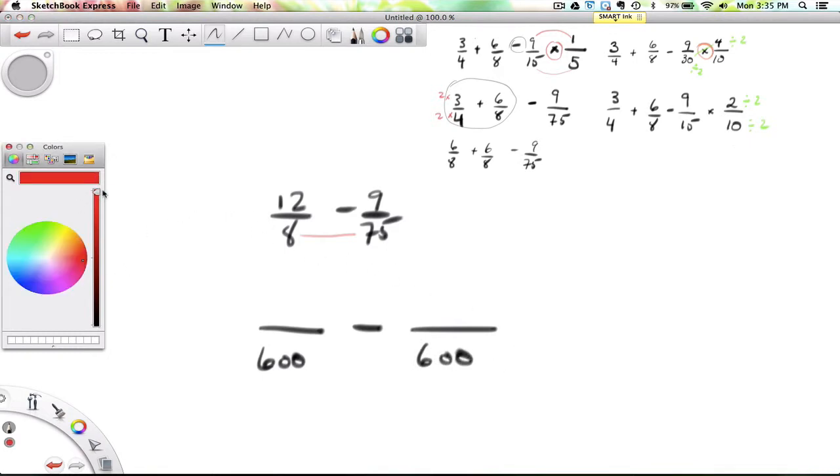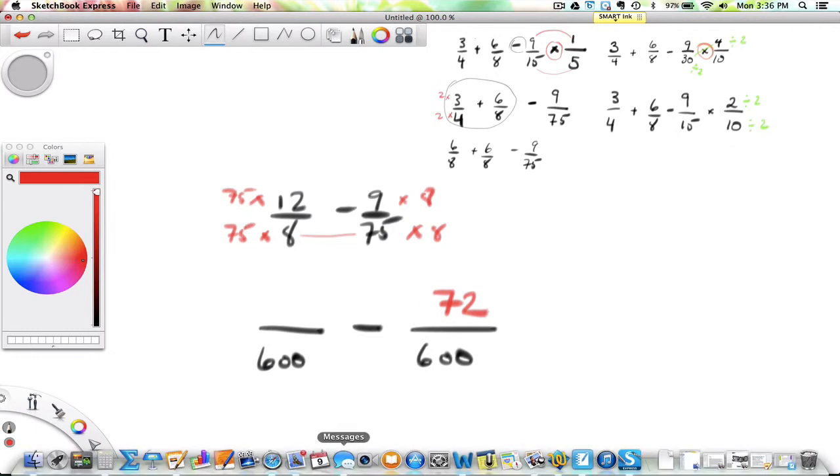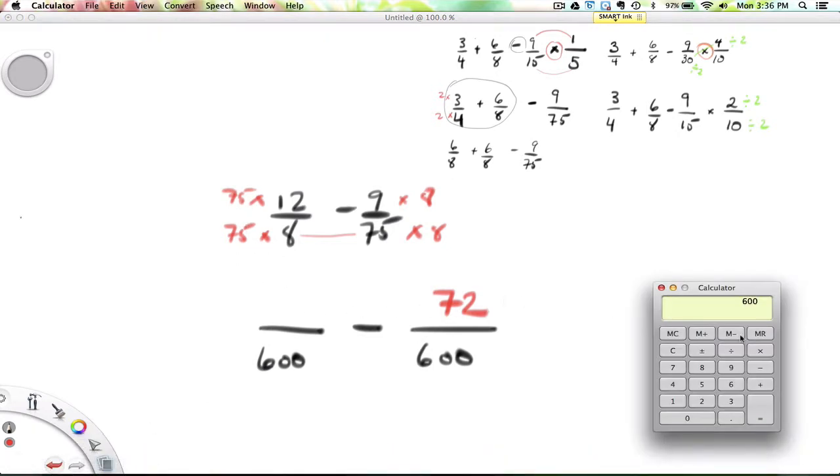600 is our denominator, minus another 600. And to get 600, I had to multiply the 8 by 75, so I have to do that to the top. And to get 600 on this side, I have to multiply it by 8, and on the top as well. 9 times 8 is 72. And 75 times 12, that's 900.